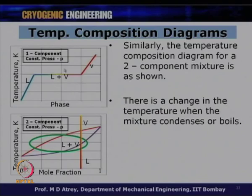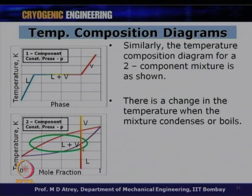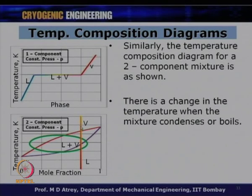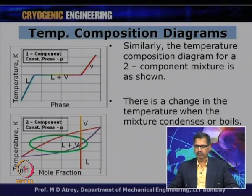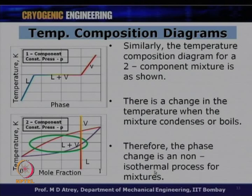There is a change in temperature when a mixture condenses or boils - the phase change is not an isothermal process. In order to go from vapor to liquid in a two-component mixture, one must decrease temperature all through the two-phase transition. The phase transformation in a two- or three-component mixture is a non-isothermal process, while it is isothermal for a single-component system. This is a major change when moving from single-component to multi-component mixtures.